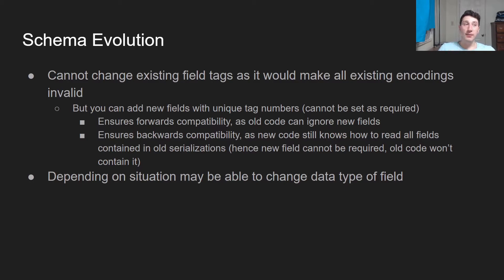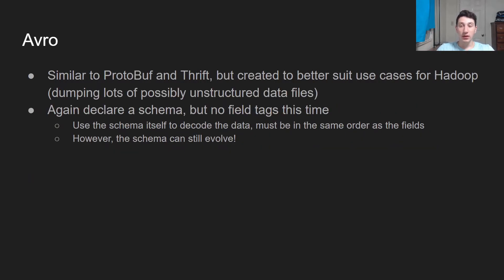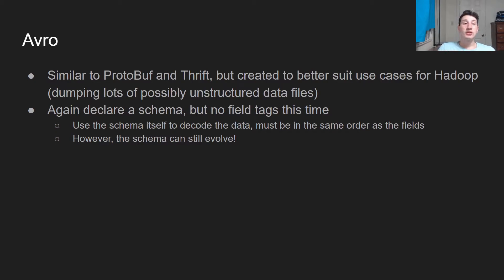That said, any new field tags we're adding have to be optional, because otherwise those old messages aren't going to contain them and it would crash newer versions of the code. Additionally, depending on the situation, you can sometimes change the data type — you can refer to the documentation for which data types you can change to what. That said, Protocol Buffers and Thrift are certainly not perfect. By virtue of having to evolve your schema by only adding new tags and not being able to add and remove fields freely, we lose a lot of flexibility — it doesn't really reflect how actual database schemas evolve, where columns are sometimes just removed.